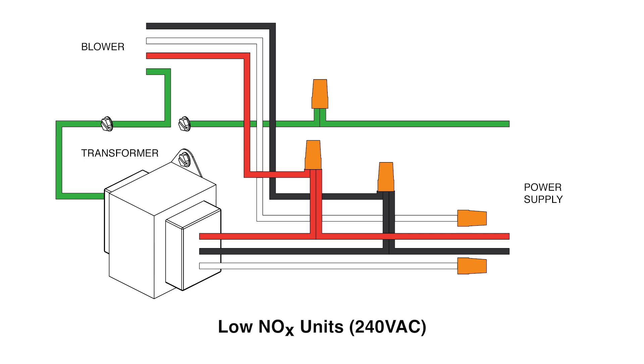For LoNox models, add each black, red, and green wire from the blower relay to the respective colored wires.